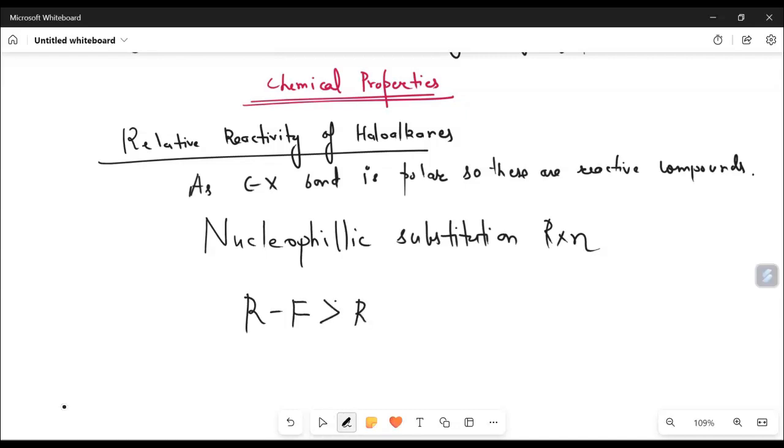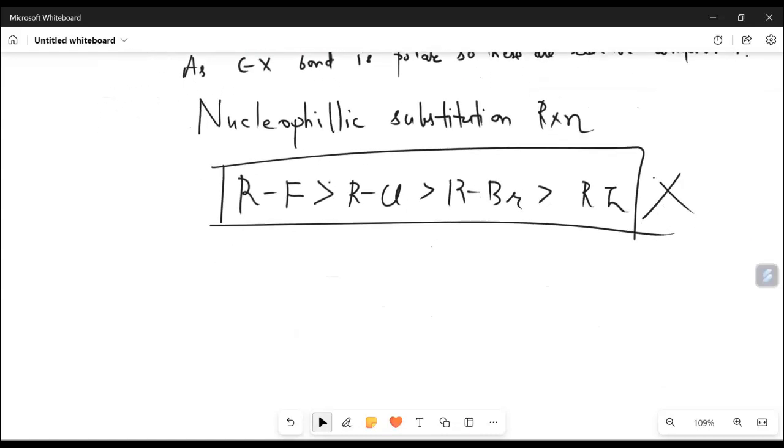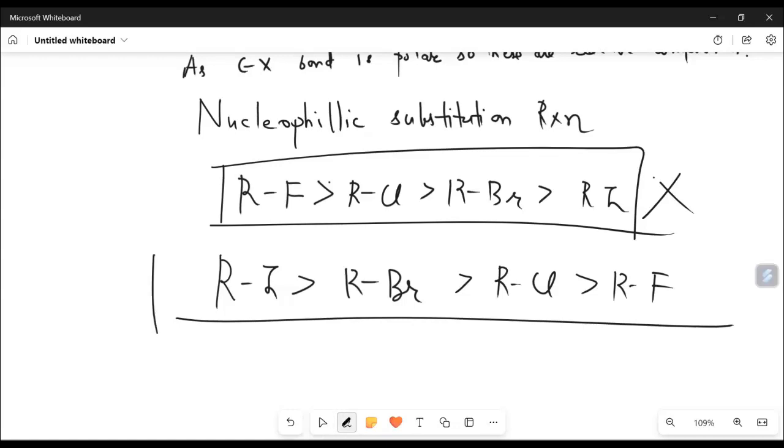So they follow nucleophilic substitution reactions. And in case of RF it is more likely, then CL, then BR, then RI. But in reality, it is not like that. So RI is the most nucleophilic reaction shows, then RBR, then RCL, then RF. So this is the right order you have to remember. The nucleophilic substitution reaction is given by RI the most, not RF the most.